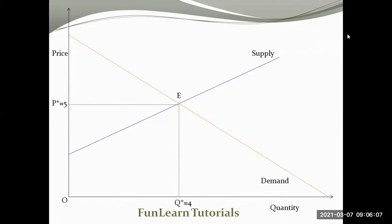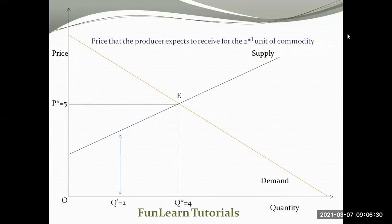Now we'll look at the side of the producers. Consumers look at the demand side because consumers demand a particular commodity, whereas producers supply a particular commodity. So this time we'll be concentrating on the supply side. We'll first look at the willingness or the expectations of the price — the price the producer expects to receive. For a particular quantity OQ star equal to 2, the height of the blue vertical line denotes the price that the producer expects to receive for the second unit of commodity.